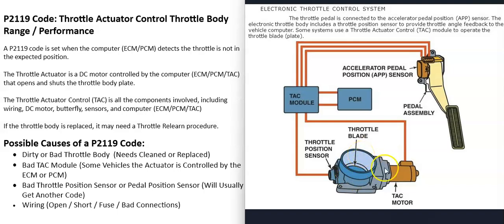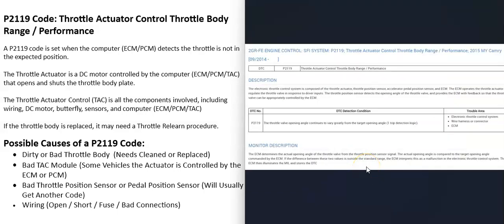When you get this P2119 code, the computer is seeing some kind of problem with the plate opening — it's not in the right position it's supposed to be. The definition for how this code is set is: the throttle valve opening angle continues to vary greatly from the target opening angle, which basically means the throttle body plate is not in the position the computer thinks it should be.